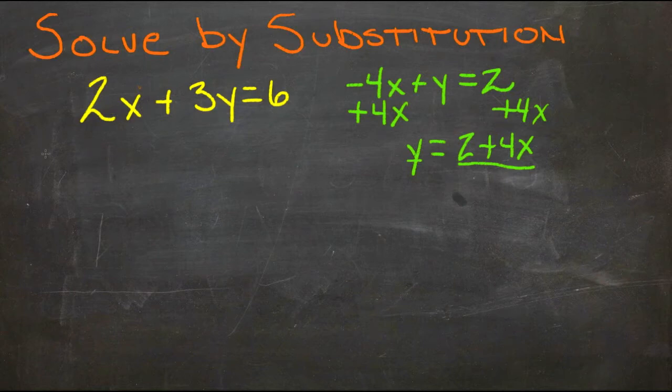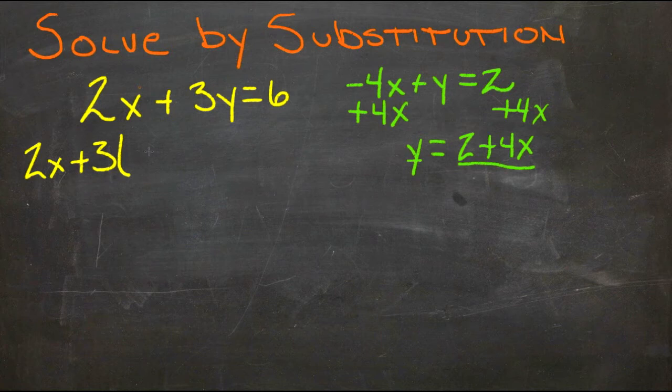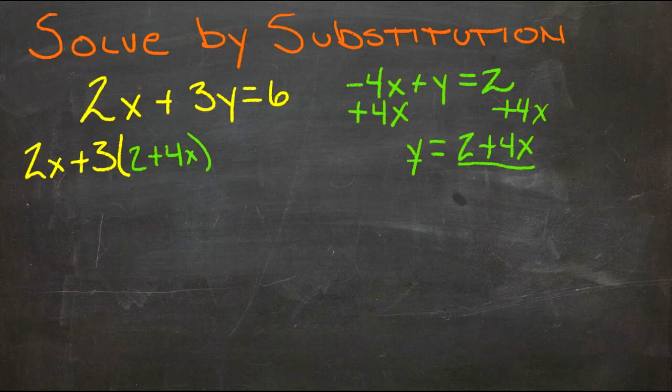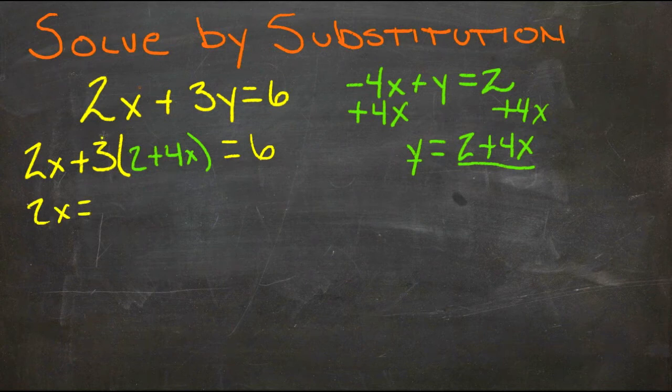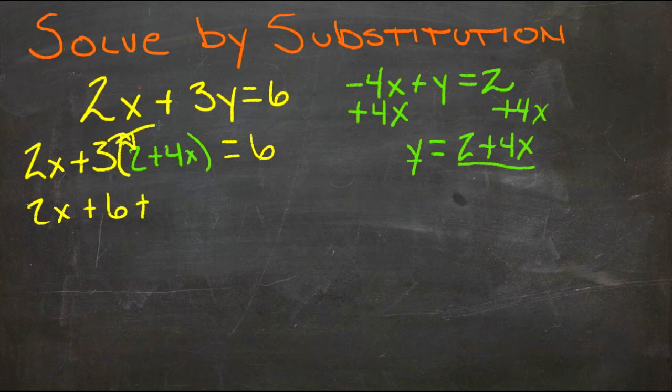So on this side then, we're going to have 2x plus 3 times (2 plus 4x), which is the same thing as y, equals 6. So then we'll have 2x plus 3 times 2 is 6, plus 3 times 4x, which is 12x, equals 6.